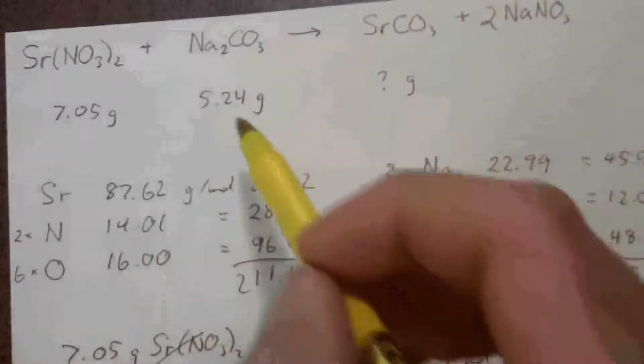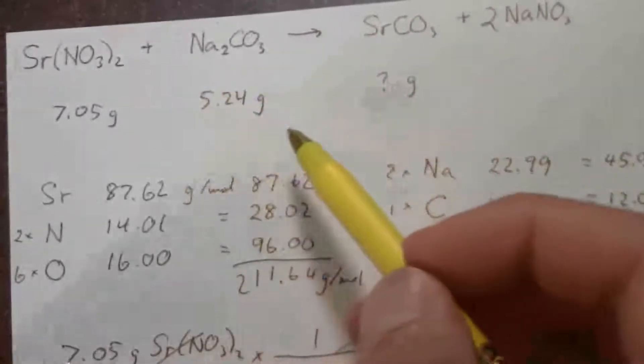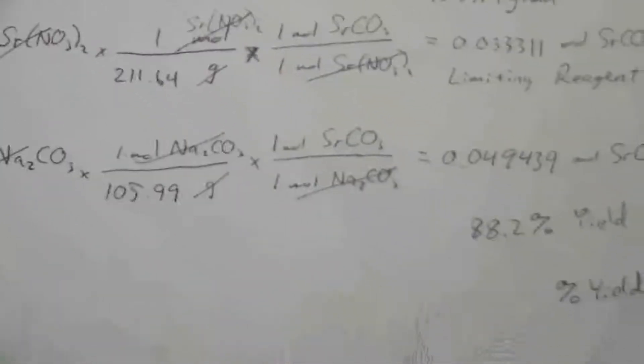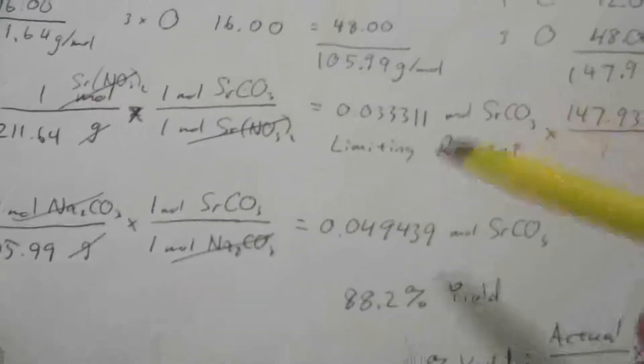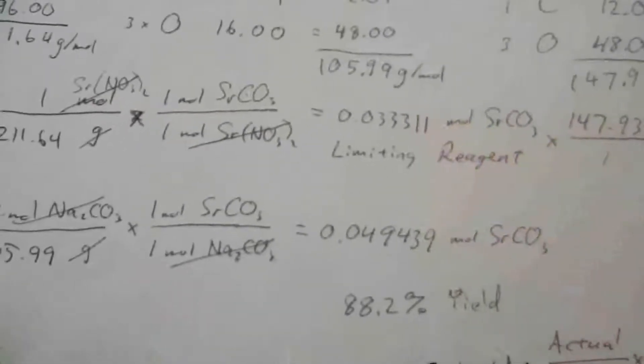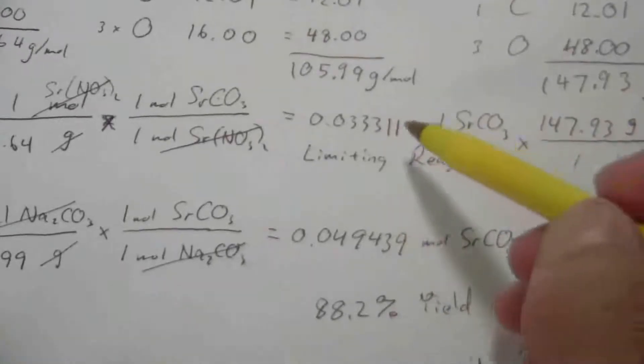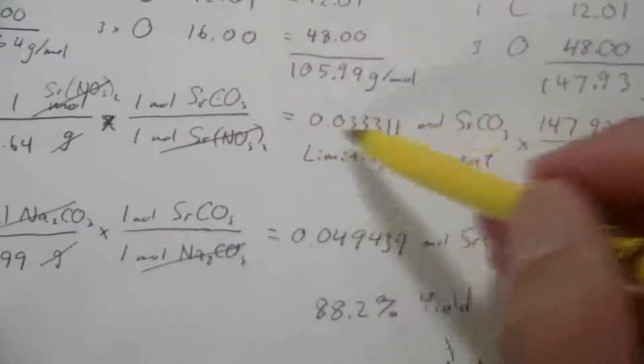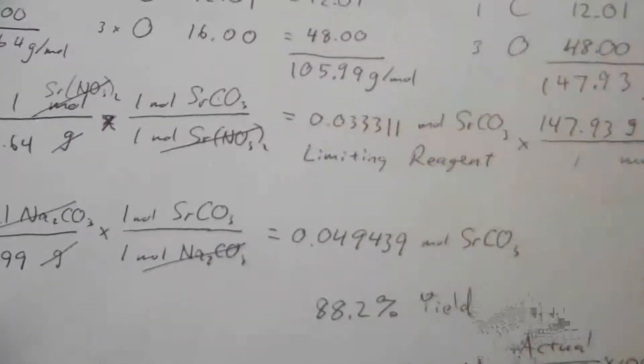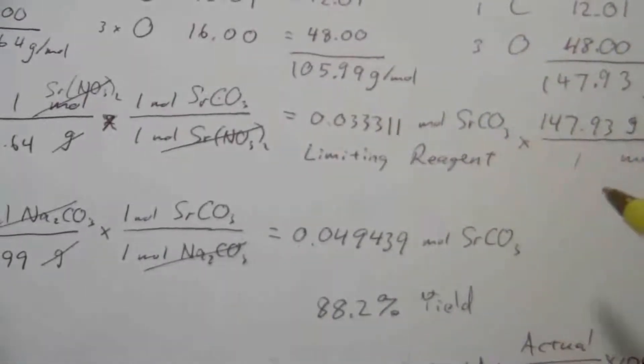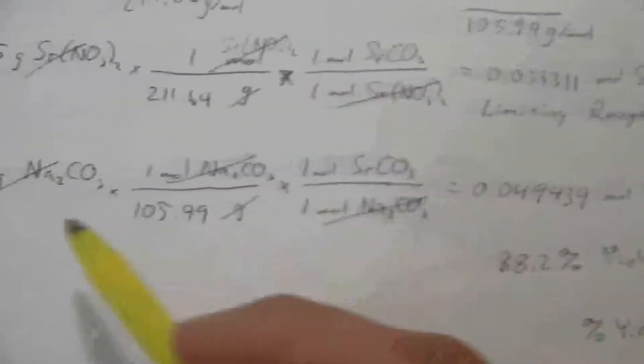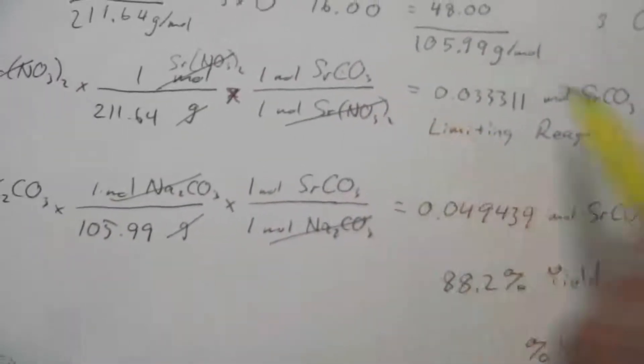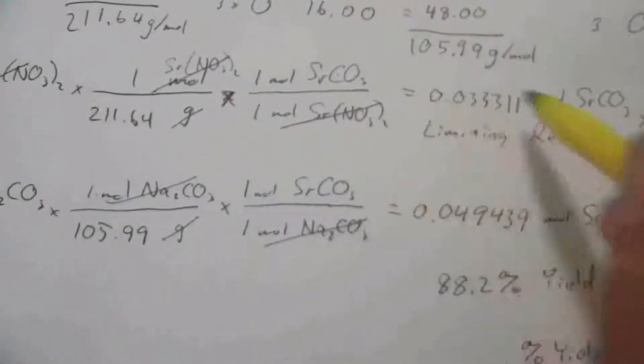So, we can actually go back and calculate, well, how much of this are we going to have left over? How much do we have in excess? So, the way we would calculate that, we can go back to these calculations that we did before, and say, okay, I know I can't produce more than 0.0333 moles of the strontium carbonate. So, based on this one, it's saying I can produce this much, but since this is my limiting reagent, it limits me to this much.